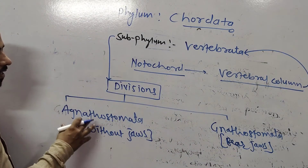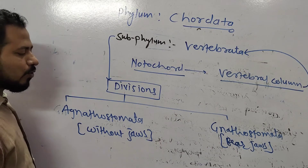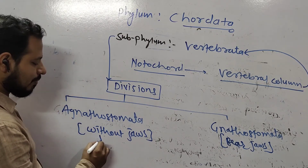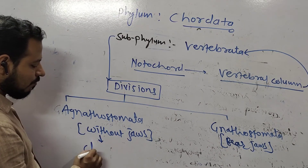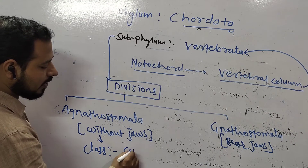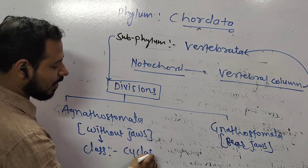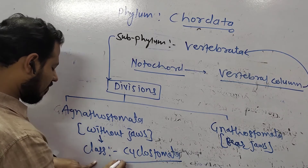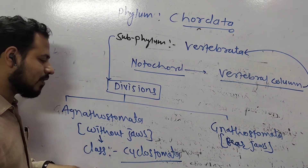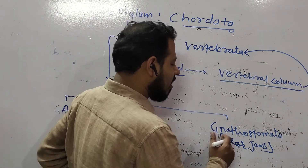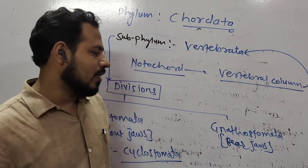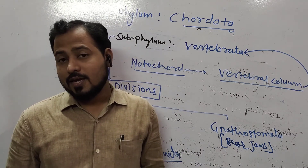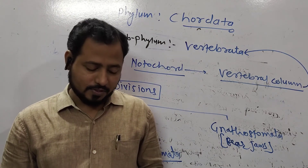Under Agnatha, the single surviving class is class Cyclostomata. Under Gnathostomata, there are two super classes: super class Pisces and super class Tetrapoda.